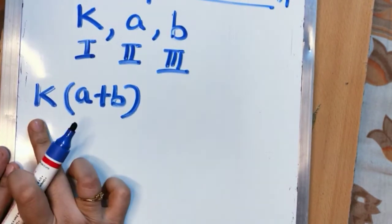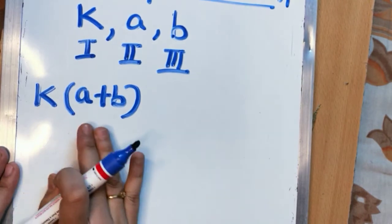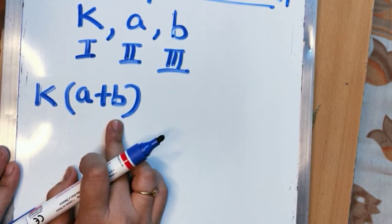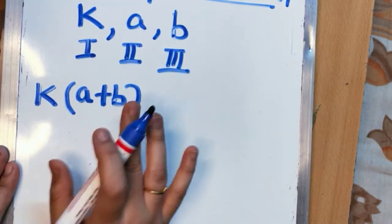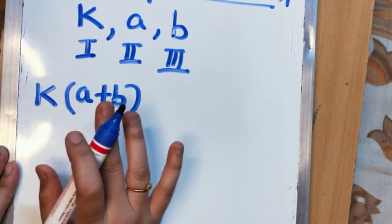That means k is getting multiplied with this summation a plus b. So how to represent this with the law of distribution?